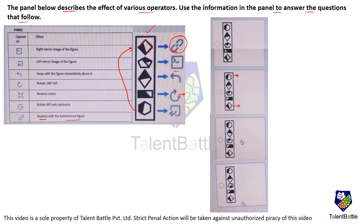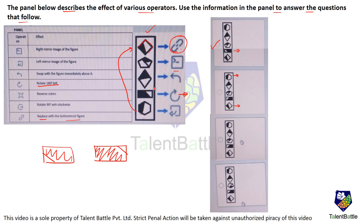This arrow symbol means rotate by 180 degrees to the left. If you have a shaded figure and rotate it 180 degrees, only option A has that correct figure — the rest are wrong. Another symbol means swap with the figure above it, so the diamond goes up and the pentagon comes below. The rectangle operator gives the answer very quickly.